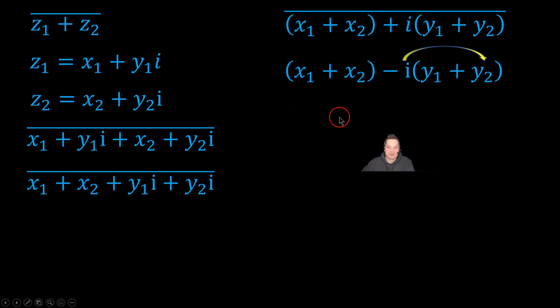So next, I'm going to distribute this negative i to each term like this. So the negative i will go over to y sub 1 and also to the positive y sub 2. It's going to look like x sub 1 plus x sub 2, so here I'm just dropping the parentheses. And now this will become negative y sub 1 i and then also negative y sub 2 i. This is distributing the negative i to each of the y's.